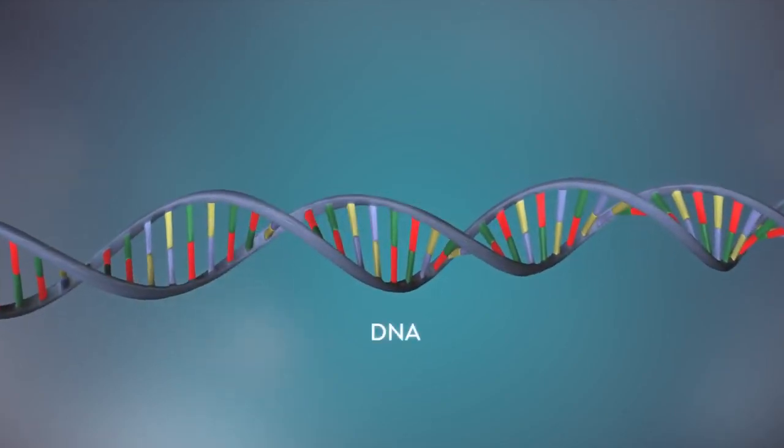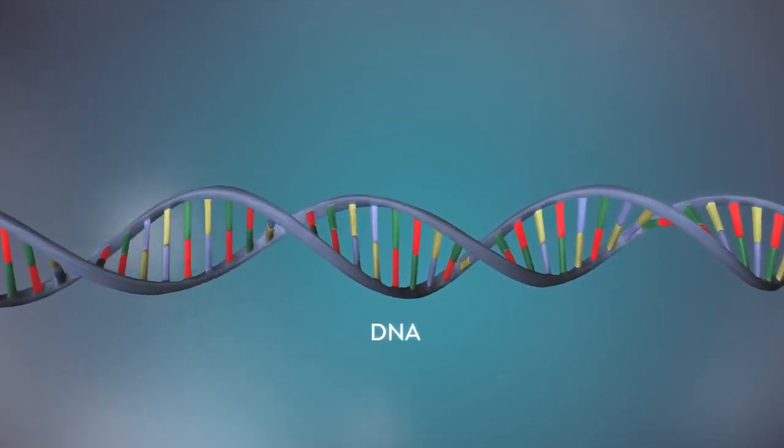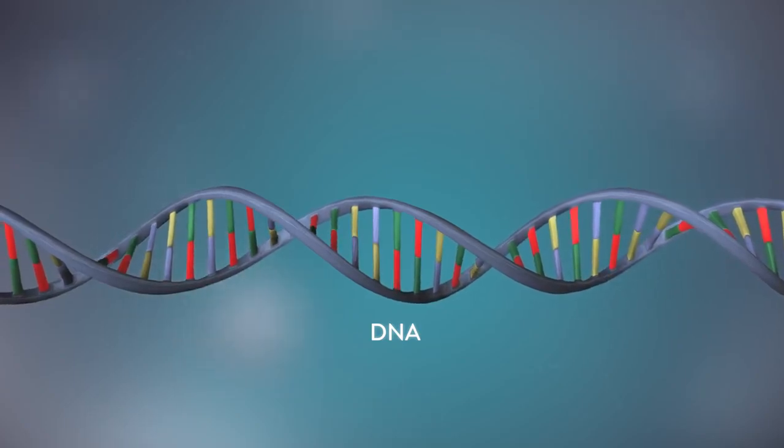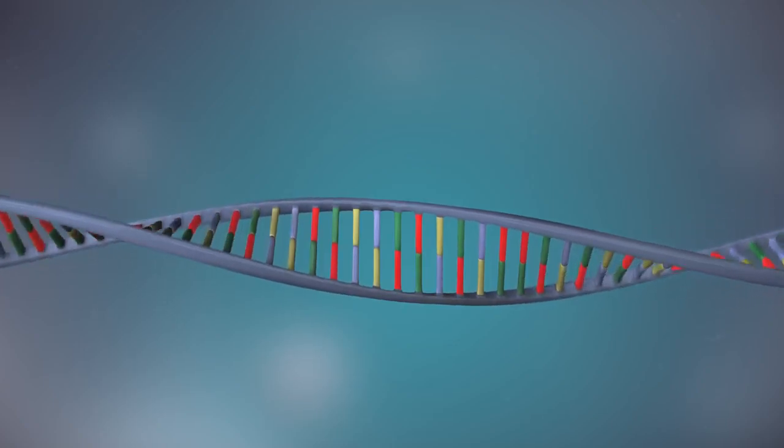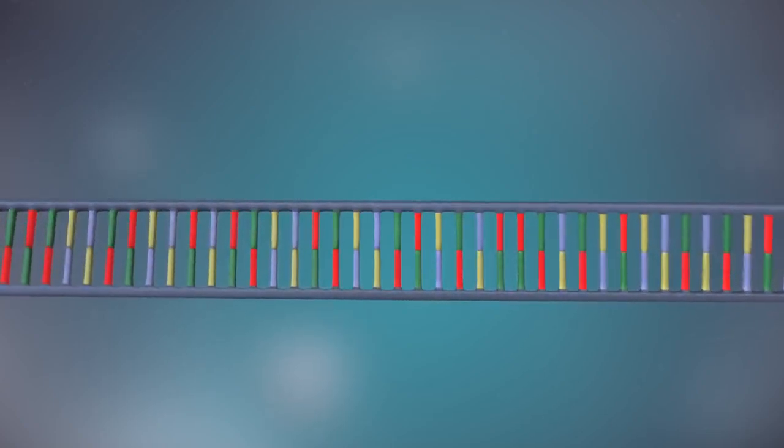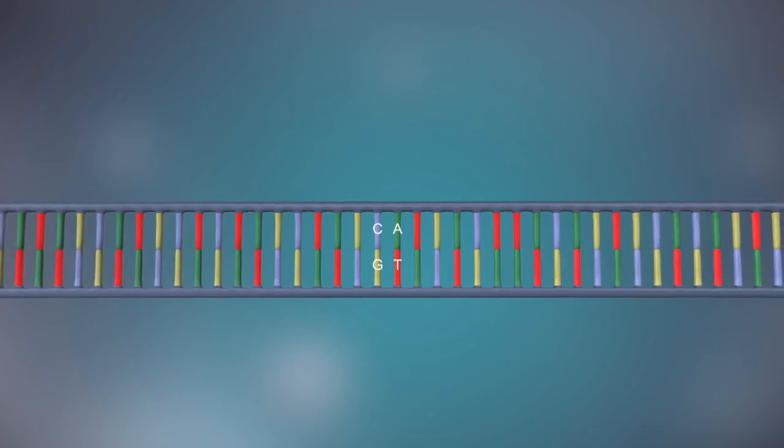DNA is a molecule made up of two strands, twisted around each other in a double helix shape. Each strand is made up of a sequence of four chemical bases, represented by the letters A, C, G and T.